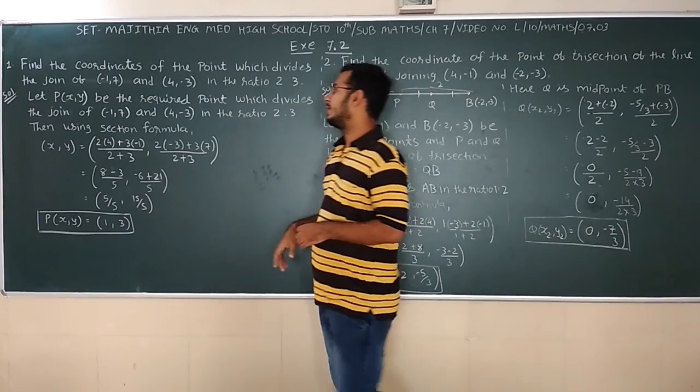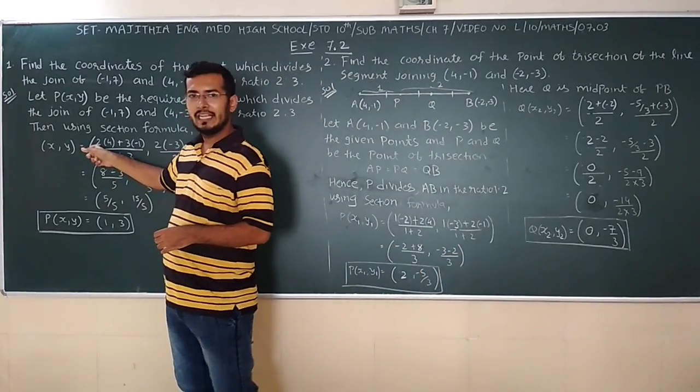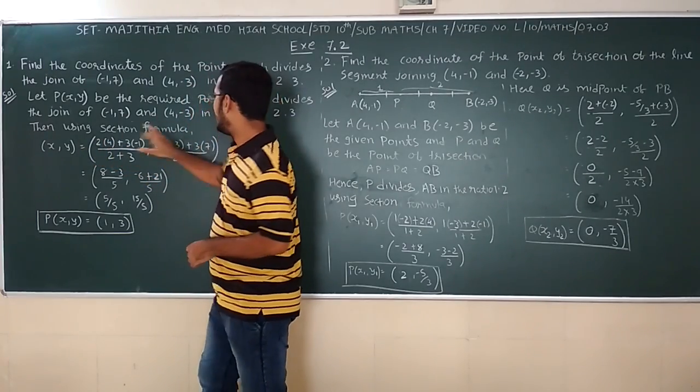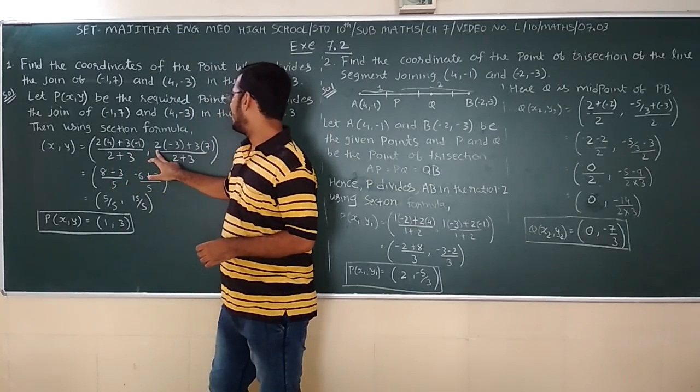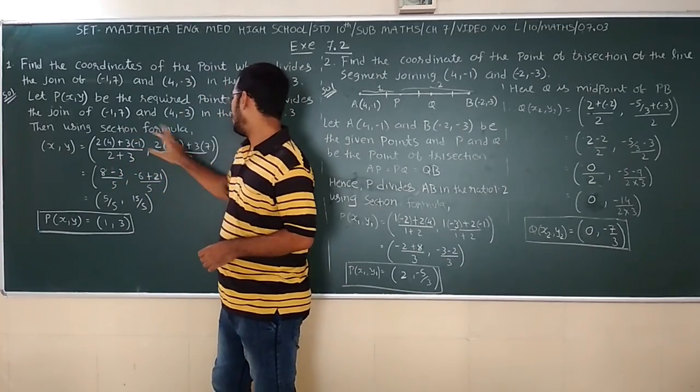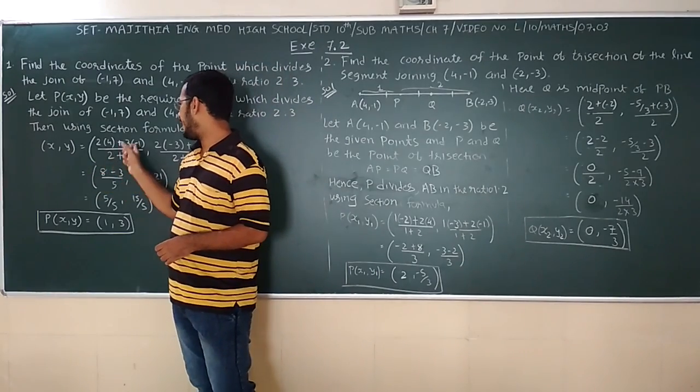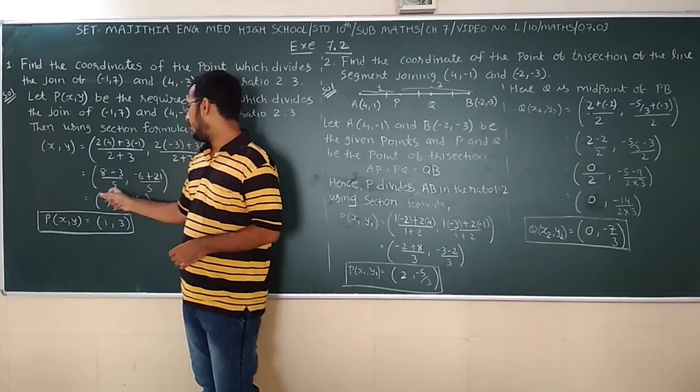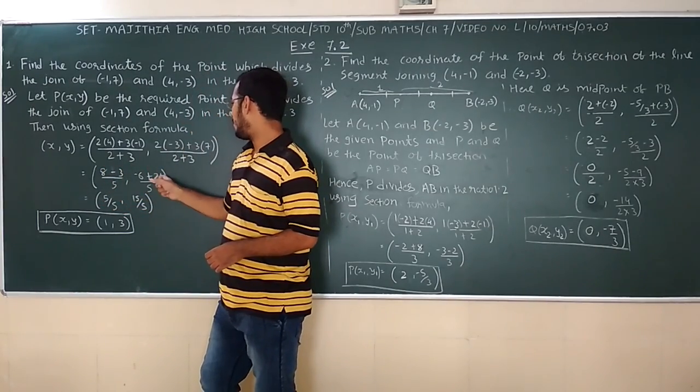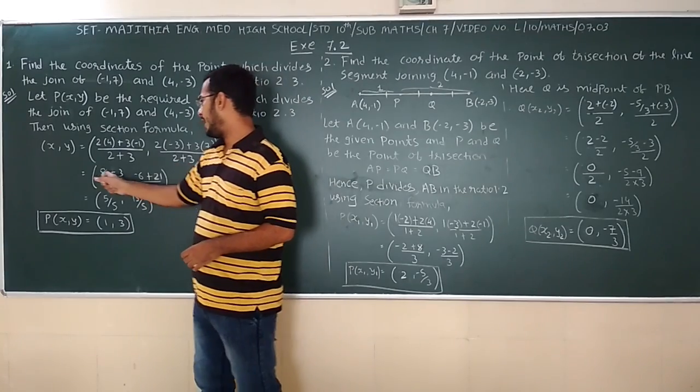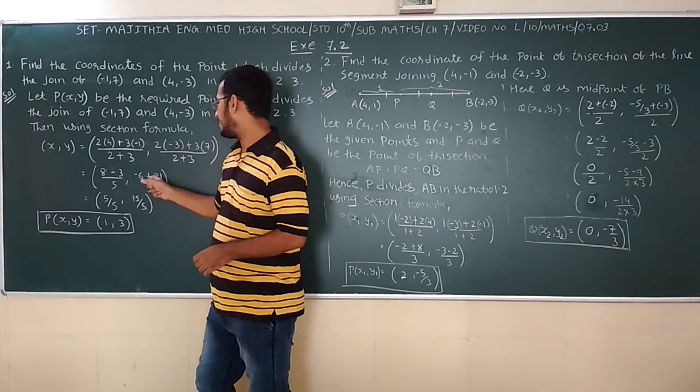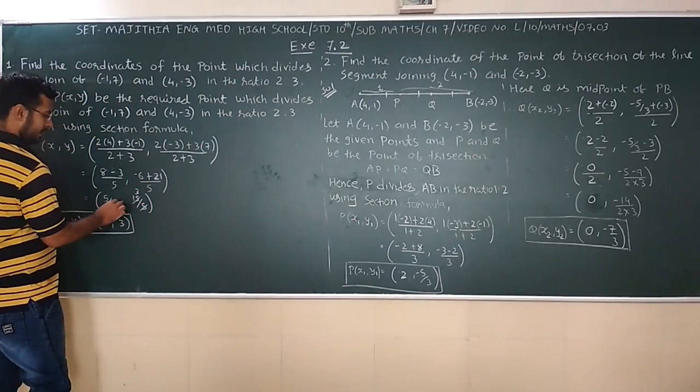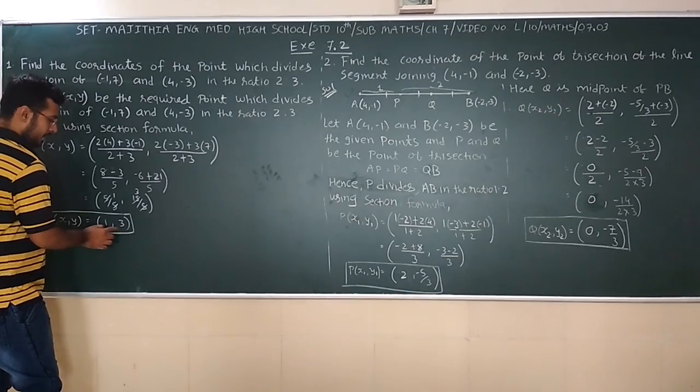Here M1 and M2 is 2:3. So M1 is 2 and M2 is 3. So 2 into 4 plus 3 into -1 upon 2 plus 3, 2 into -3 plus 3 into 7 by 2 plus 3. 2 fours are 8, 3 ones are 3, 8 minus 3 is 5 upon 5. 3 twos are 6, 7 threes are 21 upon 5. 8 minus 3 is 5, 5 by 5 is 1. -6 plus 21 is 15 by 5 is 3. So coordinates are (1,3).